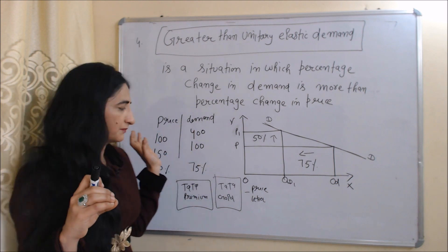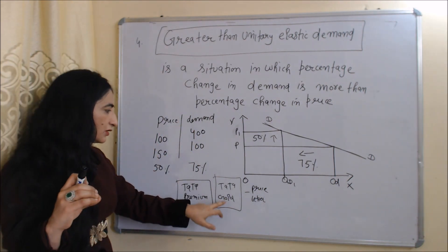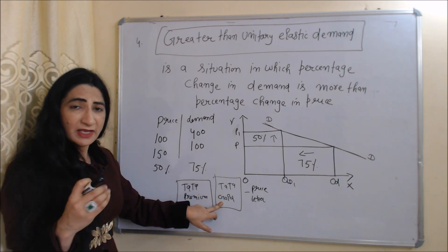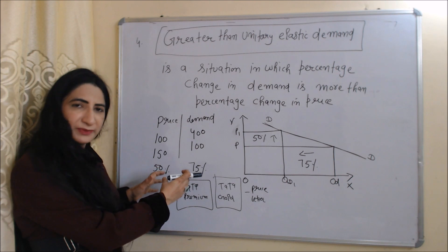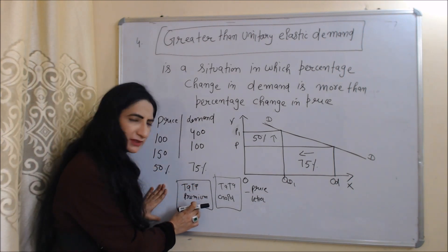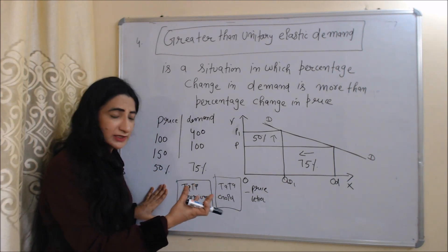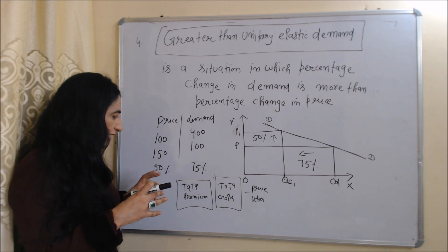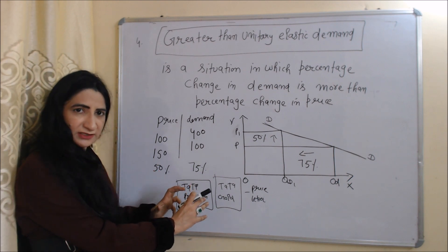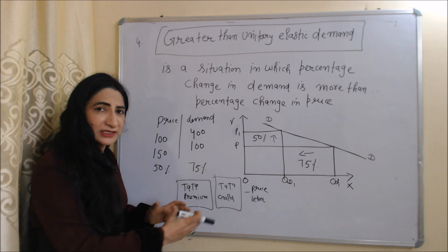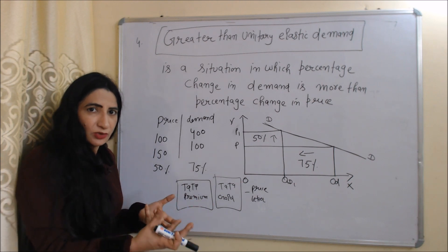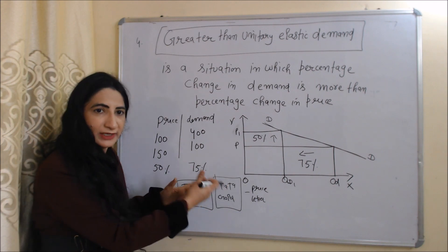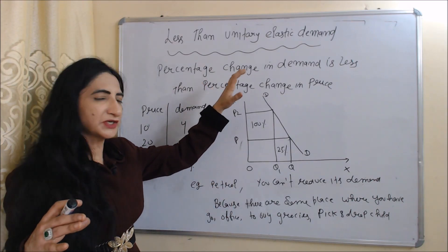DD is our demand curve. For example, as we know, Tata Gold tea price is higher than Tata Premium. Obviously, Tata Gold tea quality is better than Tata Premium. Earlier you were buying Tata Premium because of its lower price. But when the price of Tata Premium increases, you reduce your quantity more, because now there is little price difference between Tata Premium and Tata Gold. So why compromise on quality? You stop buying Tata Premium and start buying Tata Gold.